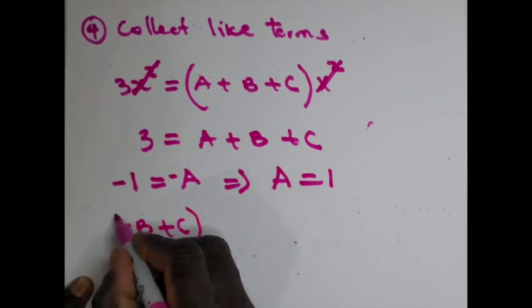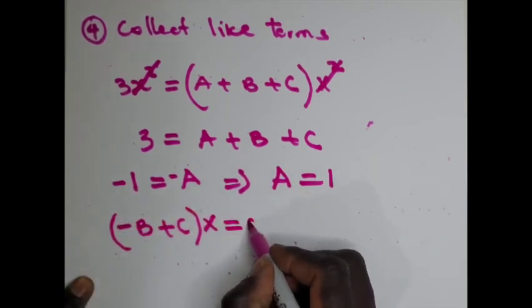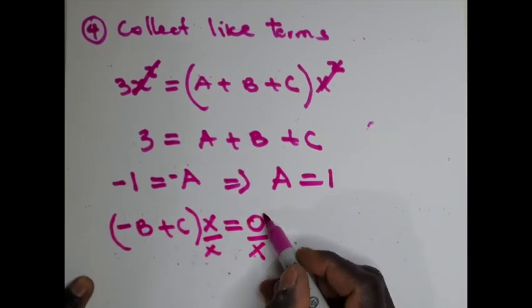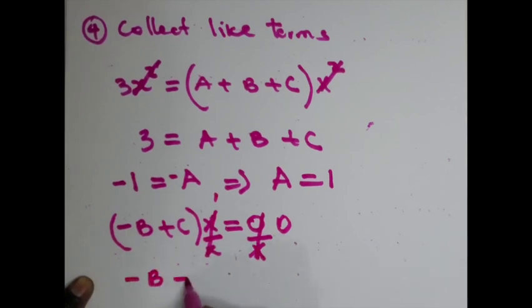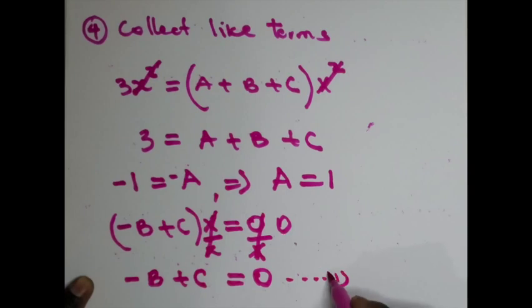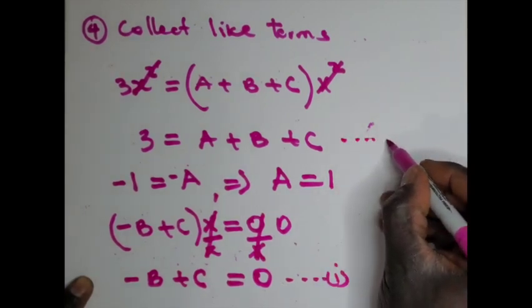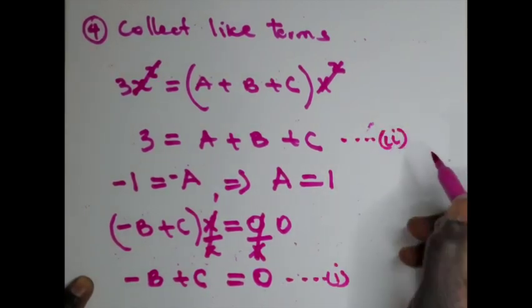And -B + C times x gives you -B + C = 0. Let's call that equation one. Let's call the other one equation two.